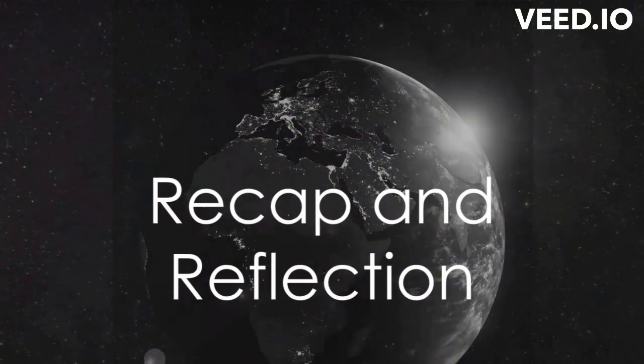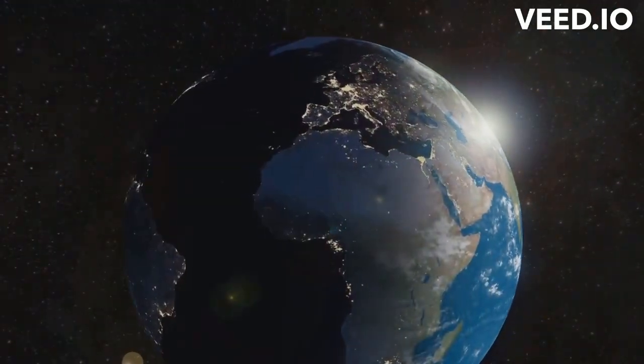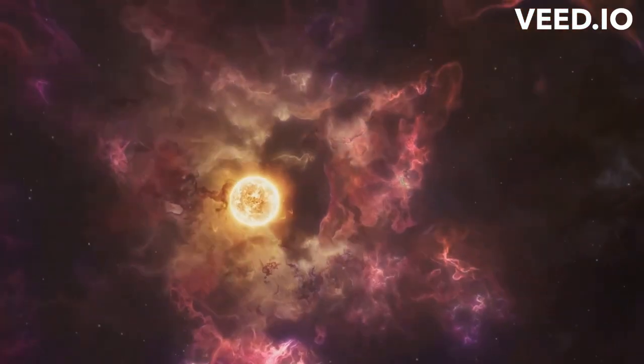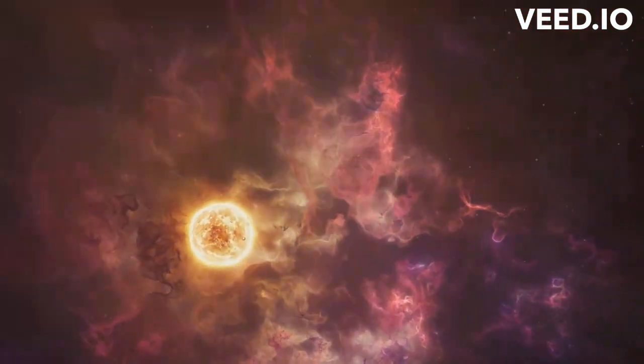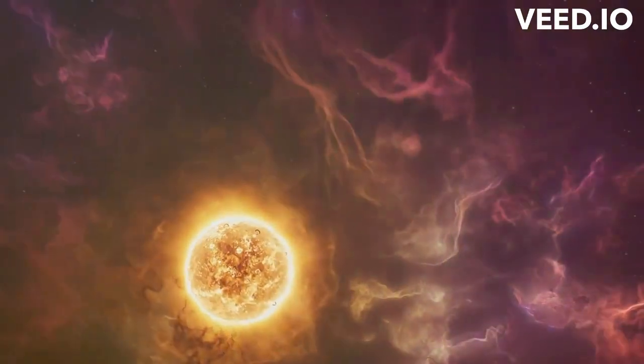So the Sun, the life-sustaining powerhouse of our Solar System, had quite an incredible journey, didn't it? This celestial body we take for granted began its life as a simple cloud of gas and dust. Over time, this cloud condensed under its own gravitational pull.